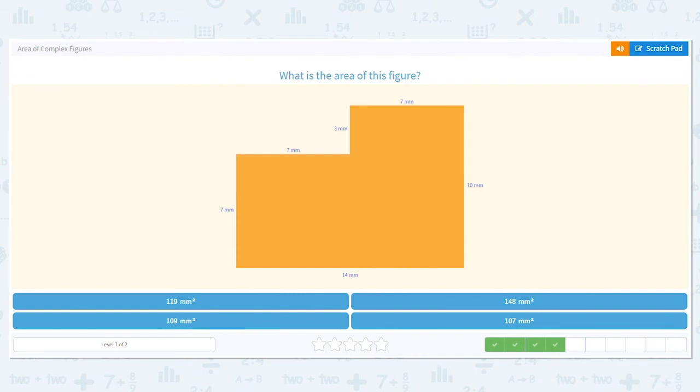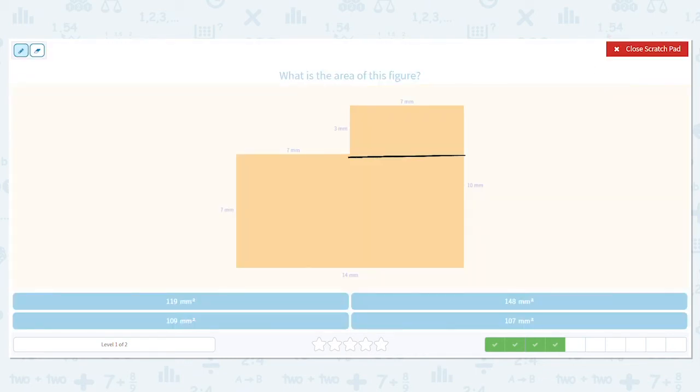Next one. I'm going to cut it this way. And I'm looking at it, I like this 10 over here. So you know what, I'm going to cut it this way. So I have this rectangle, which is 7 times 10, because I love my 10s. So that gives me 70.